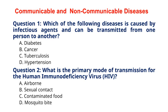Question 2: What is the primary mode of transmission for the human immunodeficiency virus, HIV? A. Airborne, B. Sexual contact, C. Contaminated food, D. Mosquito bite. The correct answer is option B, Sexual contact. Explanation: HIV is primarily transmitted through unprotected sexual intercourse with an infected person, although it can also be transmitted through contaminated blood and from mother to child during childbirth or breastfeeding.